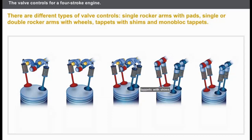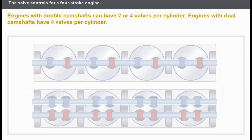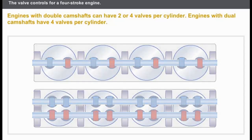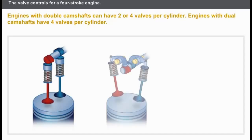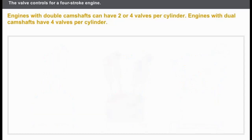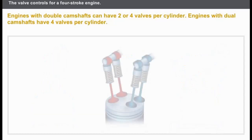Renault engines have single camshafts or dual camshafts. Engines with single camshafts can have two valves per cylinder that are activated by tappets or by rocker arms, or four valves per cylinder activated by dual rocker arms. Engines with dual camshafts have four valves per cylinder that are activated by tappets.